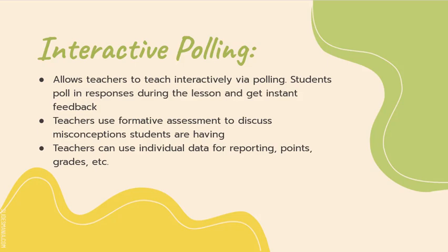Students poll in their responses during the lesson and get instant feedback of whether they're right or wrong. The teacher can then use that data to discuss with the class misconceptions they're having — why they got that right, why they answered one way or another. It's a way to check student knowledge as well as keep the activity moving and letting students actually interact with the activity.